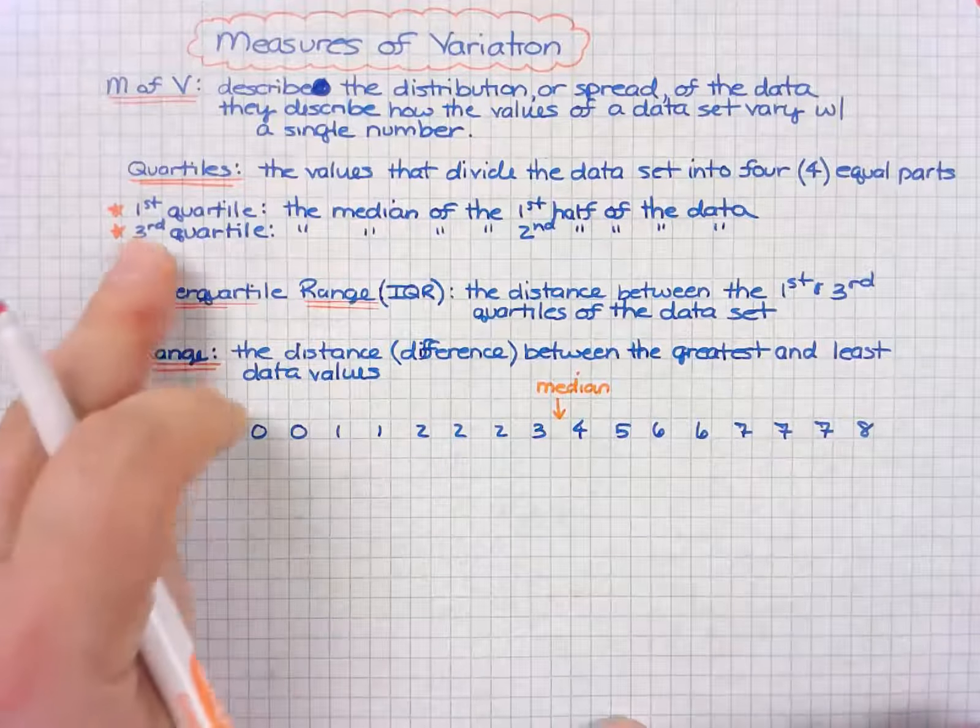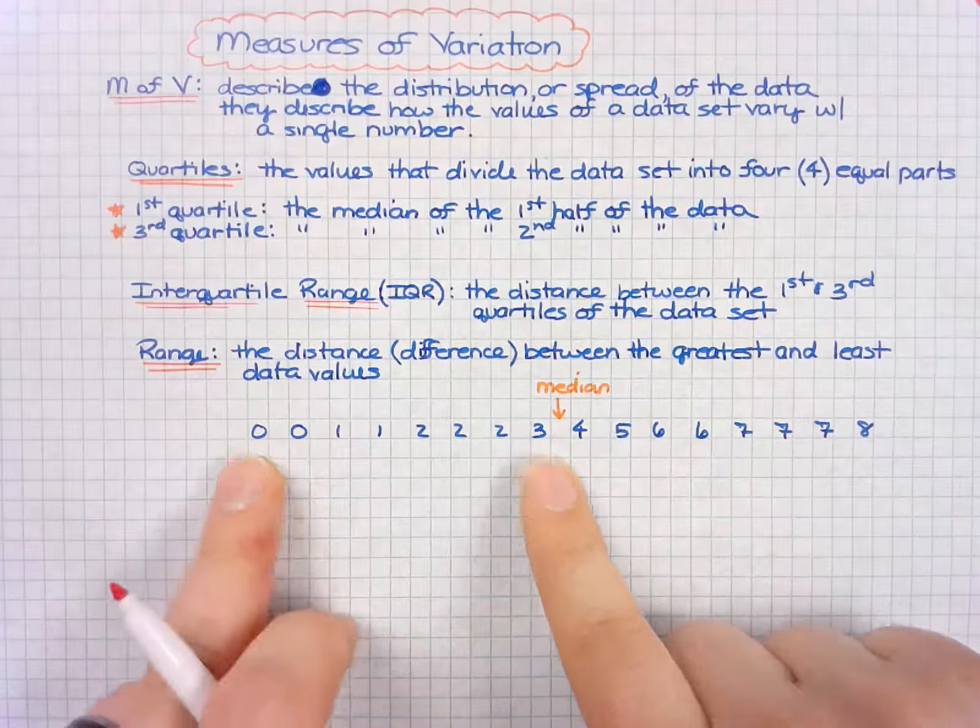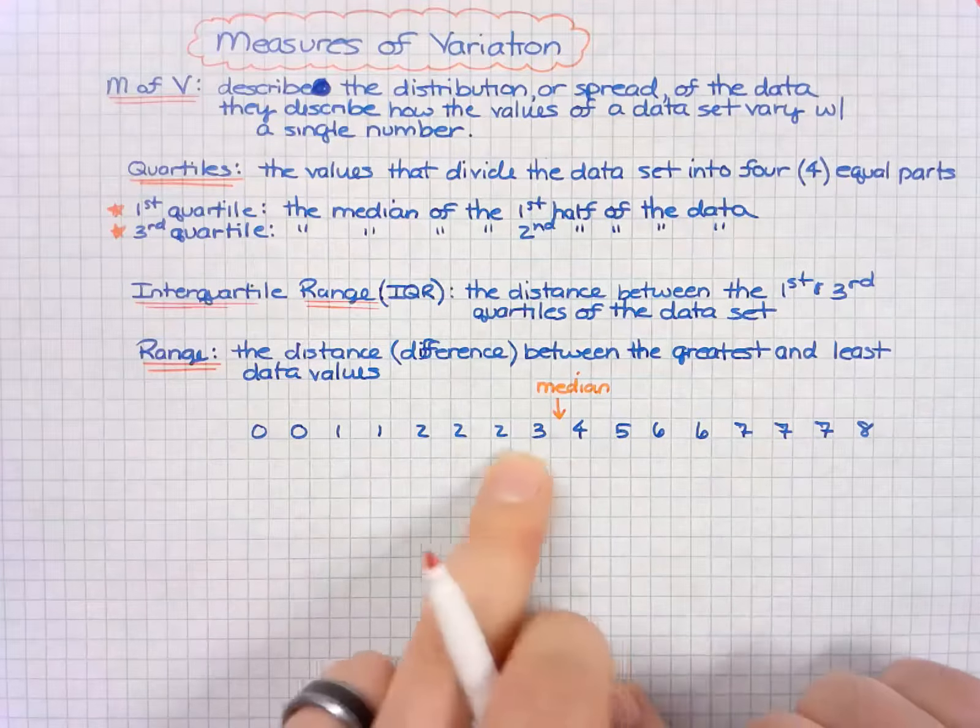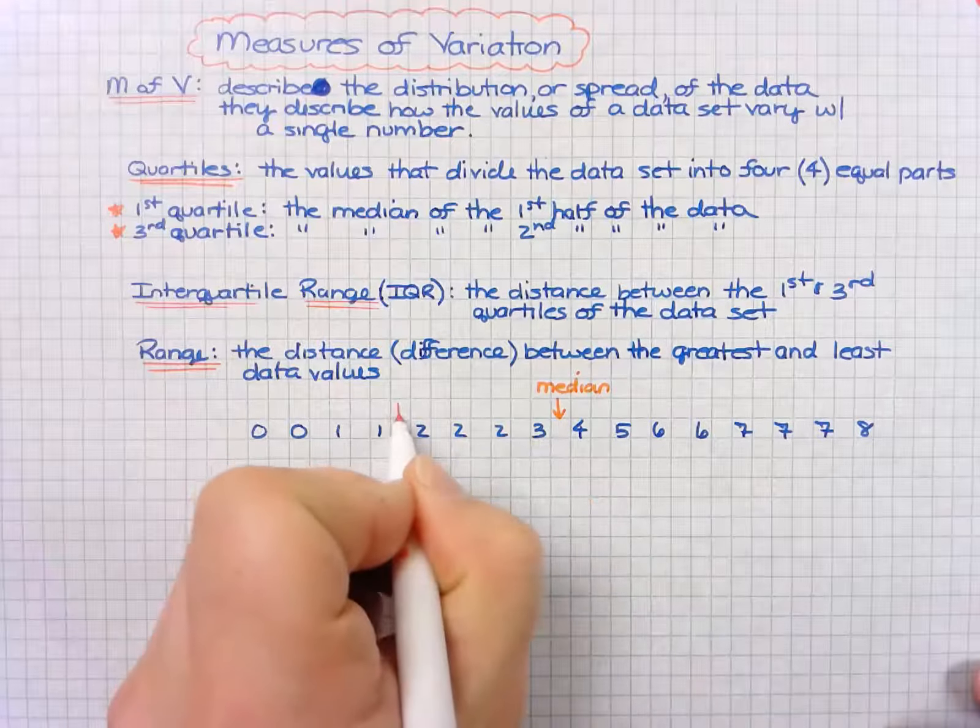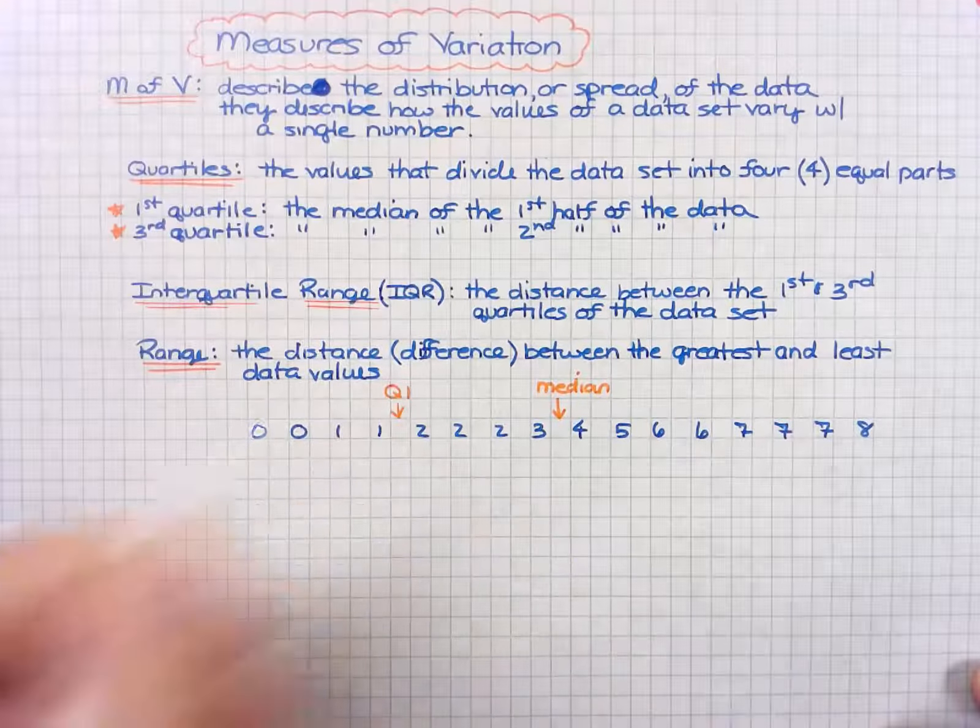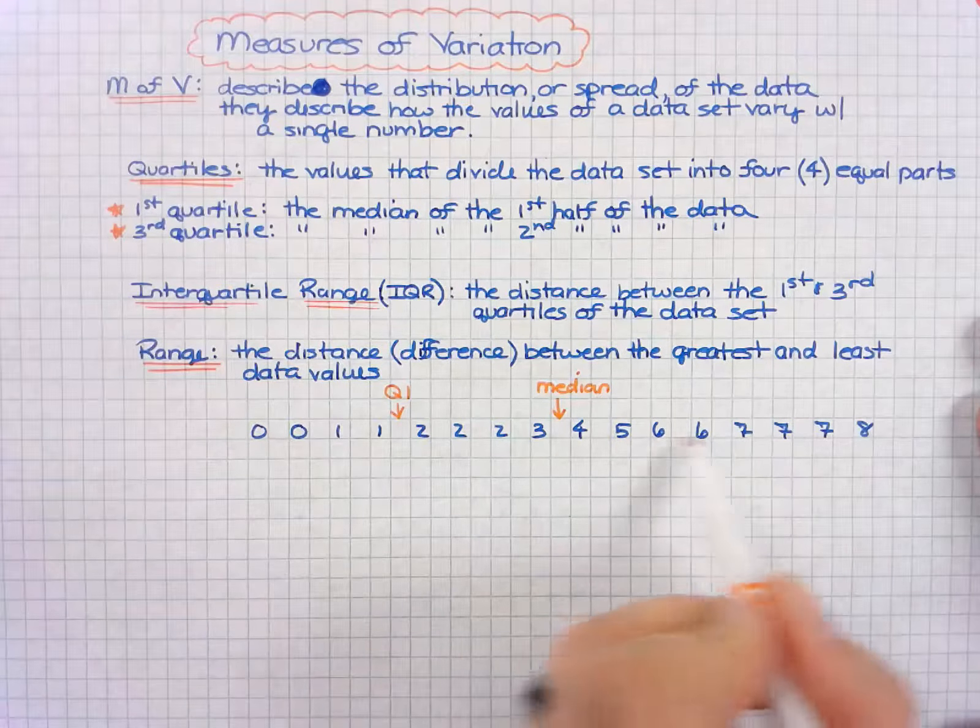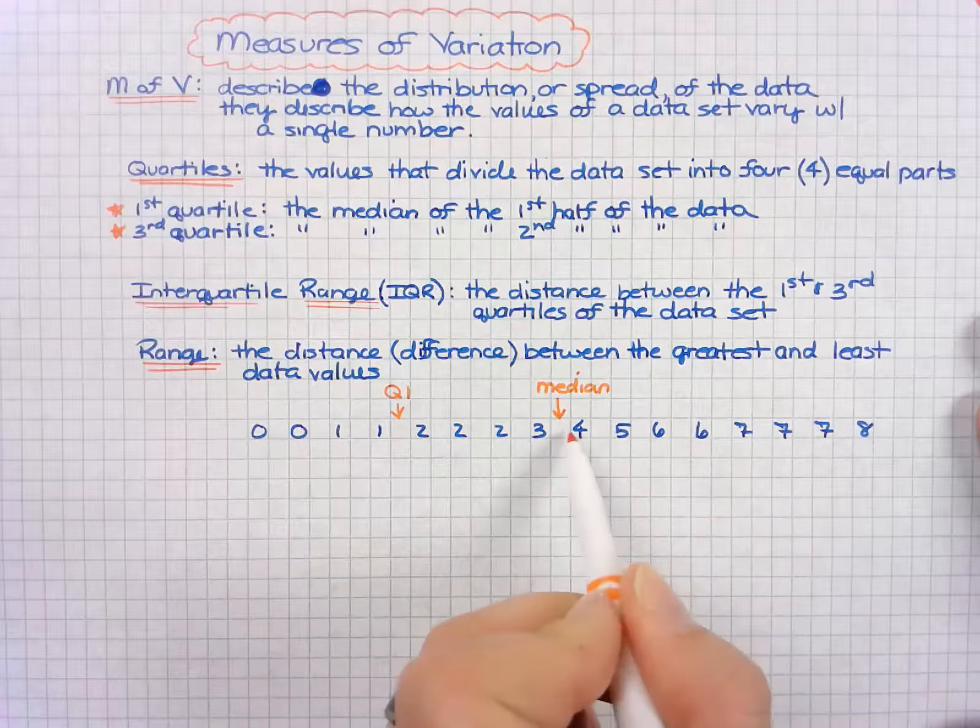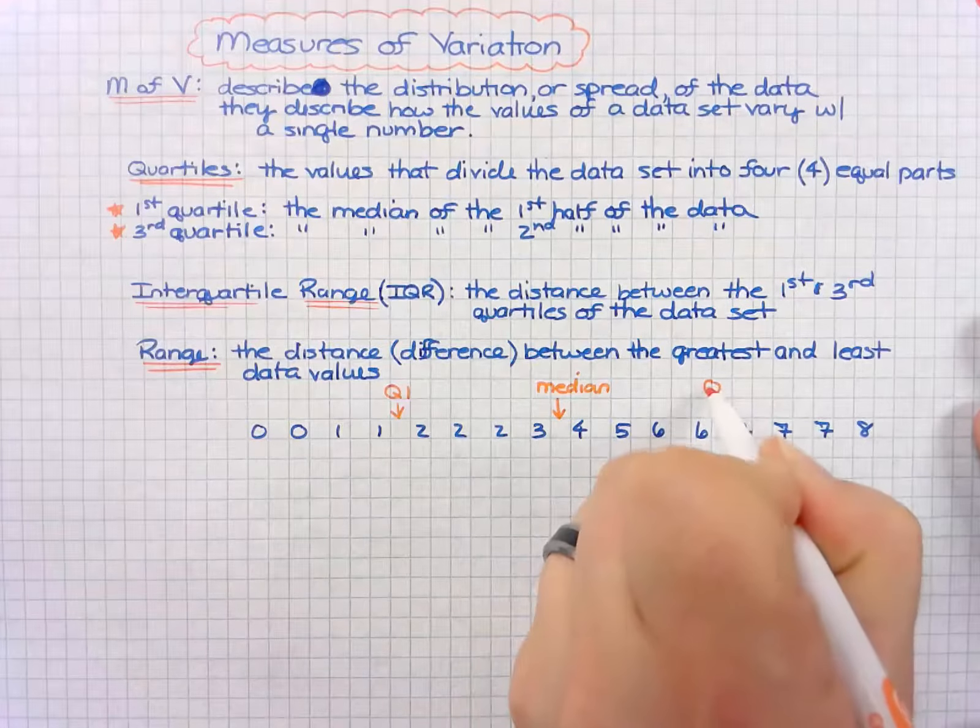Remember, the first quartile is the median of the first half of the data. So that's these four values, and so the middle of those eight values is right here, quartile one. Quartile three is the middle or median of the final eight values, which is right in between six and seven. Quartile three.